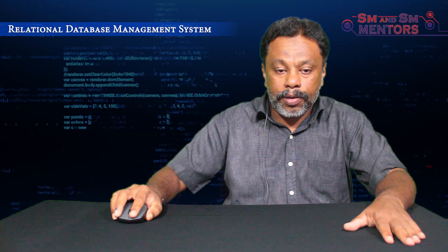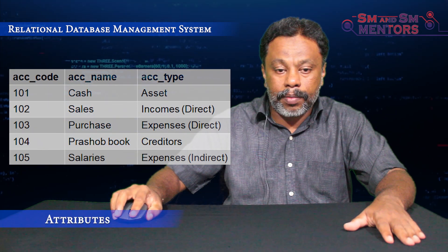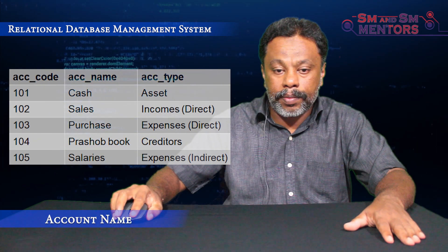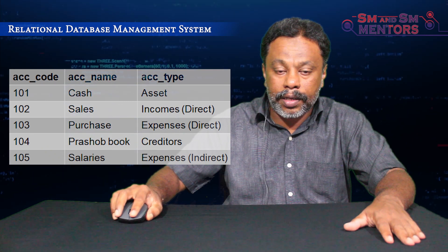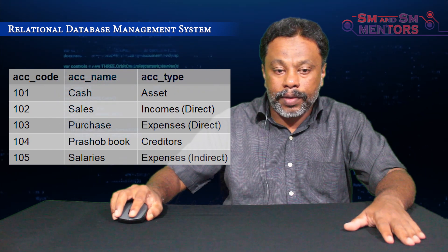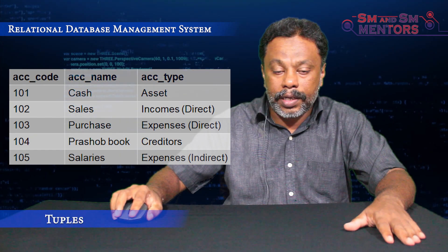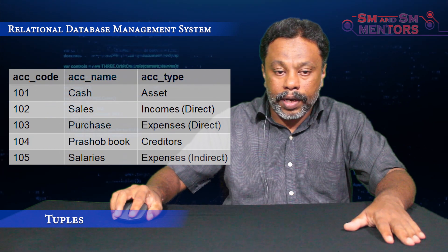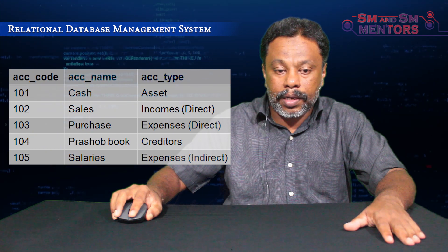Here is a sample table. In that table, there are three attributes: account code, account name, and account type. You can add five records (tuples) to this table — for example, cash, sales, accounts, and so on.